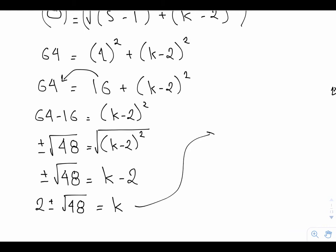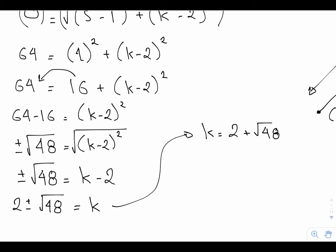So what does this mean? Well, I can either have k equaling 2 plus root 48, which if you do on your calculator, root 48 is 6.928. So here I have 2 plus 6.928, add those together, I get 8.93.